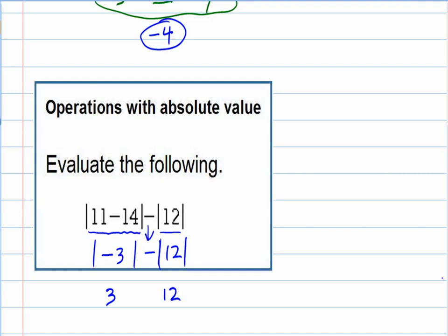And I still have this subtraction that I'm bringing down, because I want to subtract those two things. And, again, since the second one's bigger, I'm going to end up with a negative in this case. But, 3 minus 12 equals a negative 9.